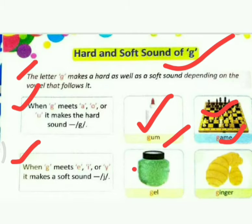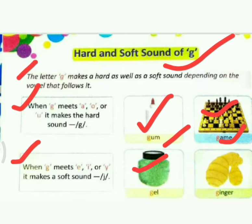Examples are here. G-E-L. The first letter is G, and the second vowel is E. I have told you: E, I, Y — when G meets these vowels, it becomes a soft sound. So how do we read it? G-E-L — gel.